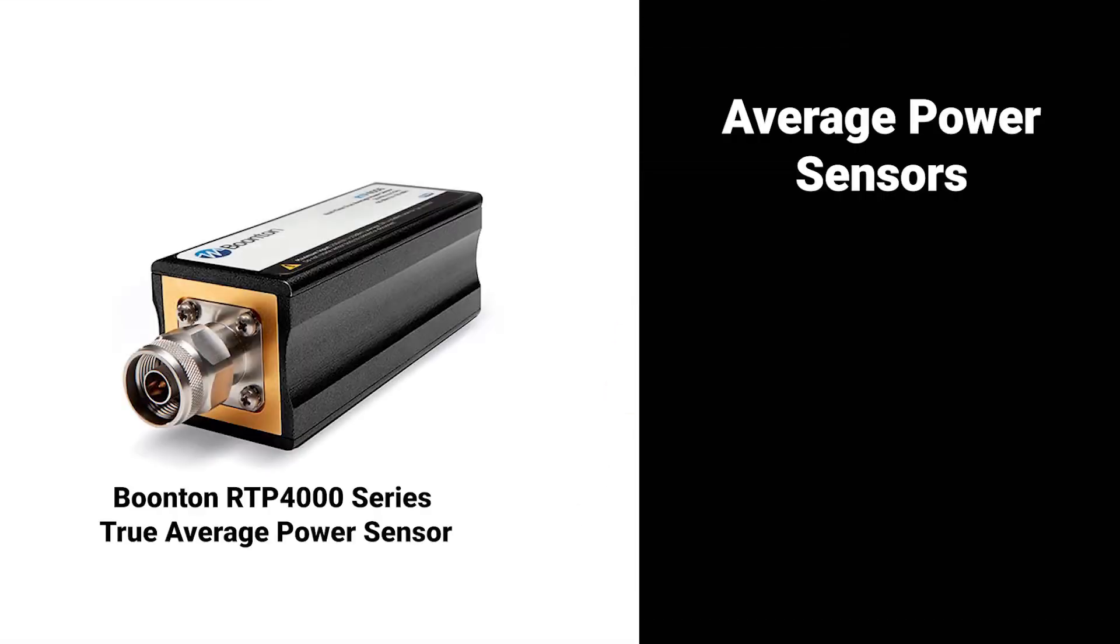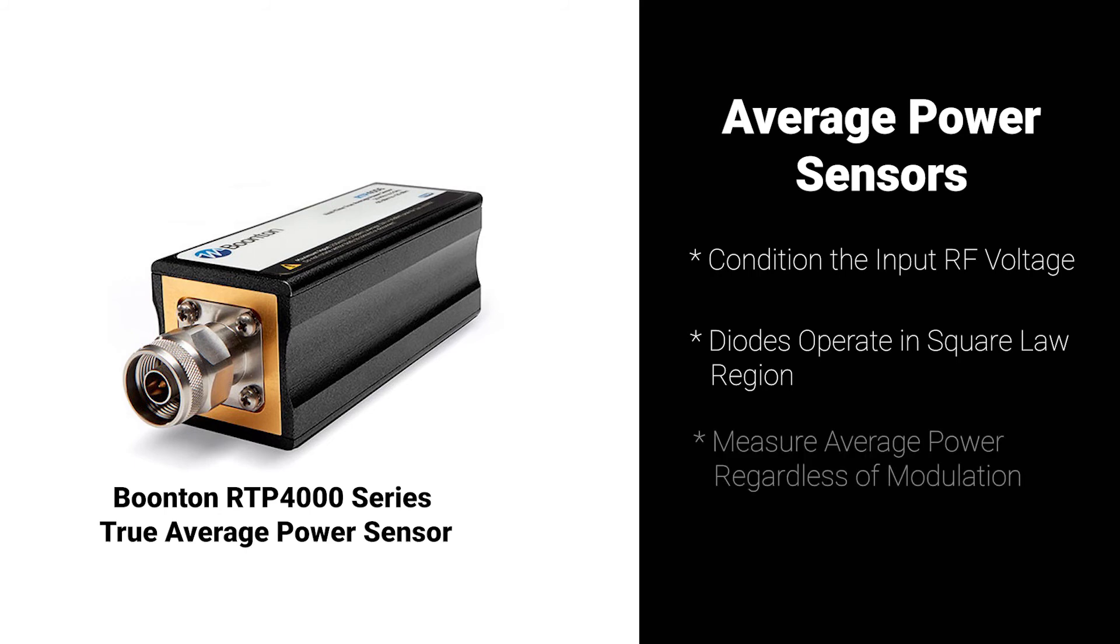Average power sensors condition the input RF voltage, which force diodes to operate in their square law region. This enables them to accurately measure average power of signals virtually regardless of modulation.